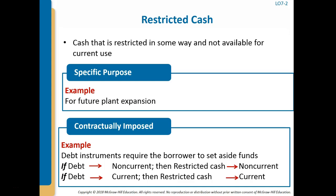Restrictions on cash may be informal, arising from management's intent to use funds for a specific purpose such as future plant expansion — this cash, if material, should be classified as investments in funds or other assets. Some restrictions are contractually imposed. Debt instruments frequently require the borrower to set aside funds, often called a sinking fund, for future payment of debt. Restricted cash is classified as non-current if the related debt is non-current, and as current if the liability is current.